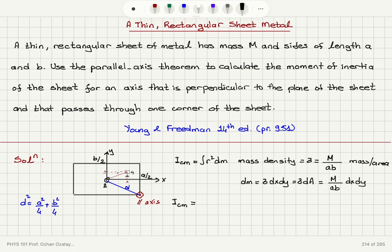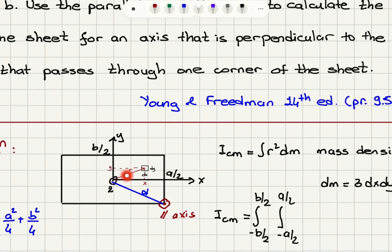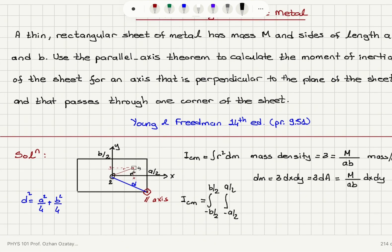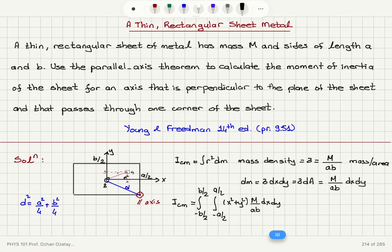For the moment of inertia through the center of mass, I set up the integral with Y ranging from −B/2 to +B/2 and X ranging from −A/2 to +A/2 of R² dm. Since R² equals X² plus Y² from the right triangle, I substitute X² + Y² for R² and M/(AB) dx dy for dm. The integral is now fully set up.